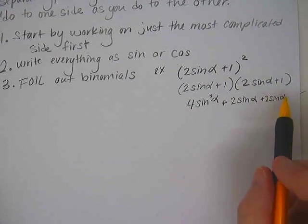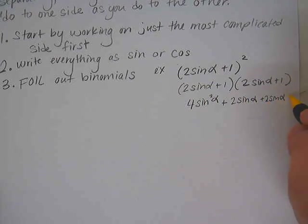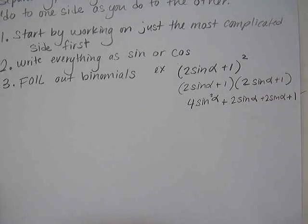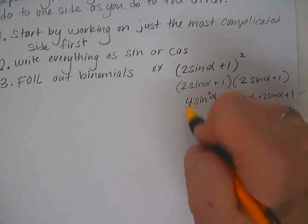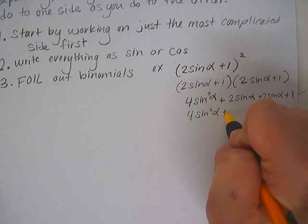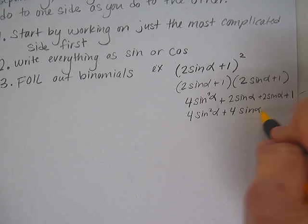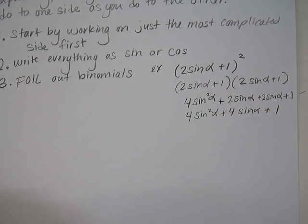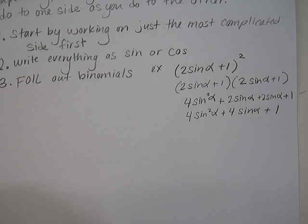Then the inside is also 2 sine alpha. The last would be 1 times 1, which is 1. So we can simplify this as 4 sine squared alpha plus 4 sine alpha plus 1.